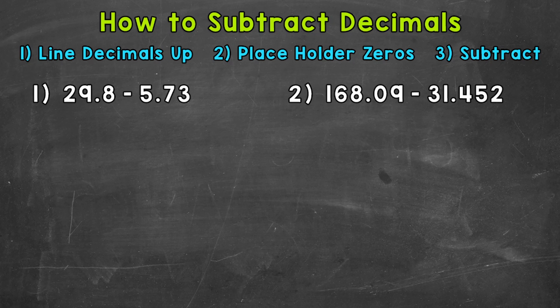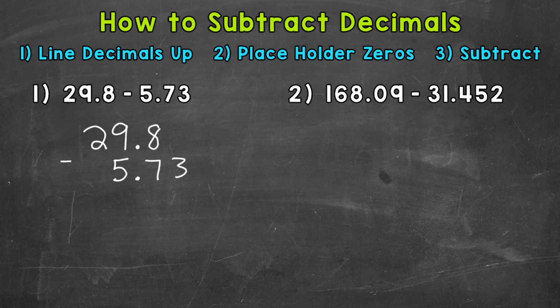Let's jump into our examples and start with number one, where we have 29 and 8 tenths minus 5 and 73 hundredths. So the first thing that we want to do is line our decimals up, meaning we'll have 29 and 8 tenths minus 5 and 73 hundredths. So the decimals are lined up.